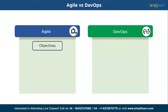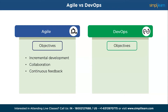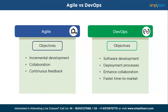Next, we have objectives. Agile aims to deliver high-quality software through incremental development, collaboration, and continuous feedback. Whereas DevOps aims to streamline the software development and deployment process, enhance collaboration, and achieve faster time to market.